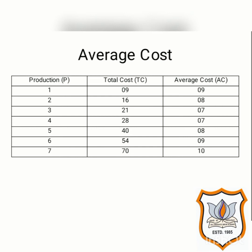A hypothetical example has been given here showing production, total cost, and average cost. As production increases, total cost also increases. To find average cost, total cost is divided by production. When one unit was produced, total cost was Rs. 9, so 9 divided by 1 gives average cost of 9. Similarly, when two units are produced, total cost is 16, so 16 divided by 2 gives average cost of 8. In the same manner, average cost for all the units has been found out.